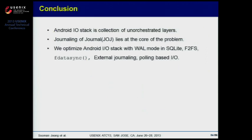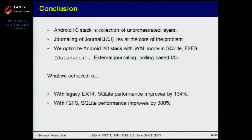So far, we have examined the Android I/O stack and Android I/O characteristics caused by SQLite and EXT4. We found that journaling of journal is the most critical problem in the current Android I/O stack. We optimized this I/O stack with WAL mode, F2FS, fdatasync, external journaling, and polling-based I/O. Through these techniques, we achieved significant performance increase in the current Android I/O stack, and this improvement is solely from software modifications.